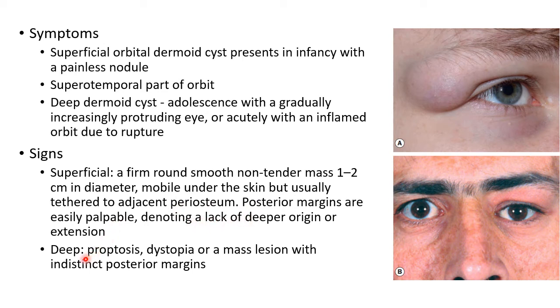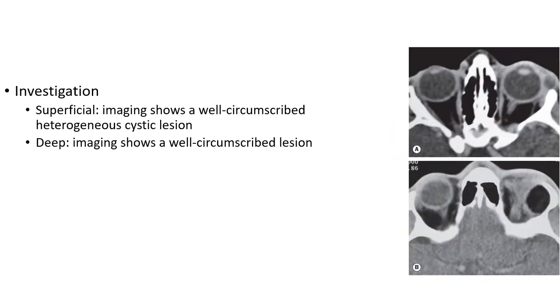Coming to deep dermoid cyst, the signs include proptosis, dystopia, or a mass lesion with indistinct posterior margins. This picture shows a case of deep dermoid cyst — as you can see, the patient presents with dystopia.